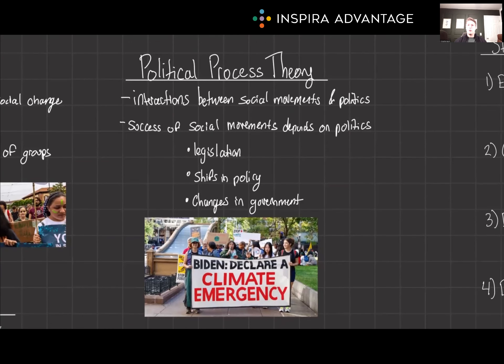Next up, we've got political process theory. This takes a more dynamic approach, focusing on the interaction between social movements and the political contexts in which they operate. It suggests that the success of a social movement is significantly influenced by political opportunities that may arise, such as a change in government, new legislation, or shifts in public policy. These opportunities can empower movements, making it easier for them to gain public support, access political decision makers, and achieve their objectives. This theory also considers the role of political constraints and how movements navigate these challenges to bring about change.